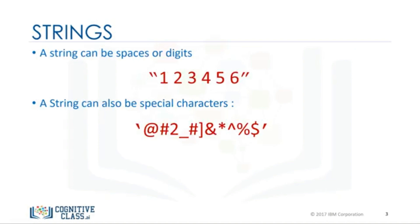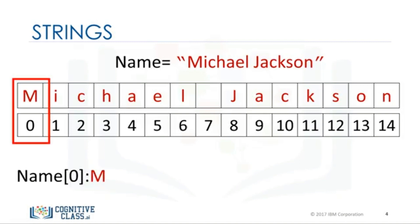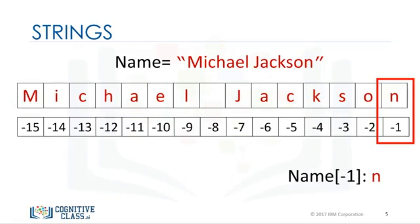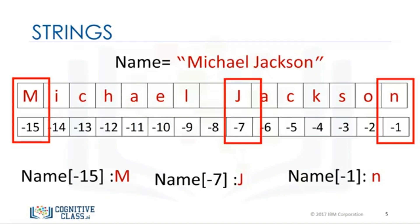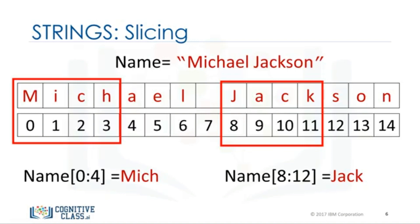We can bind or assign a string to another variable. It is helpful to think of a string as an ordered sequence. Each element in the sequence can be accessed using an index represented by the array of numbers. The first index can be accessed as follows. We can access index 6. Moreover, we can access the 13th index. We can also use negative indexing with strings. The last element is given by the index negative 1. The first element can be obtained by index negative 15, and so on. We can bind a string to another variable. It is helpful to think of a string as a list or tuple.